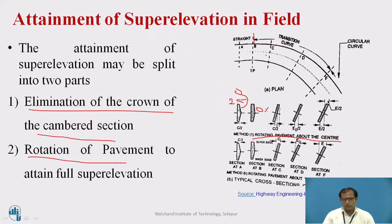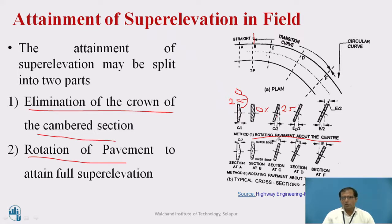The first objective is to make the outer half 2.5% equal to the inner half 2.5%. From point B to C, we are gradually raising the outer half. At point C, the camber value of the outer half is also equal to the camber value of the inner half. So at point C, we have completely eliminated the crown — we have made the camber value equal on both the outer half and the inner half. This is the first step: elimination of the crown.